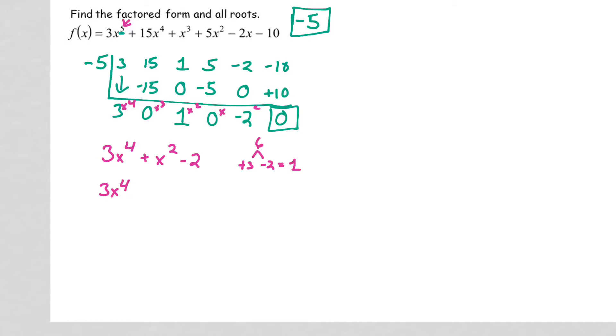So three x to the fourth plus three x squared minus two x squared minus two. I'm going to group these and group those. In the first one, I can pull out a three x squared, which leaves me with x squared plus one. In the second one, I'm going to pull out a negative two, x squared plus one.